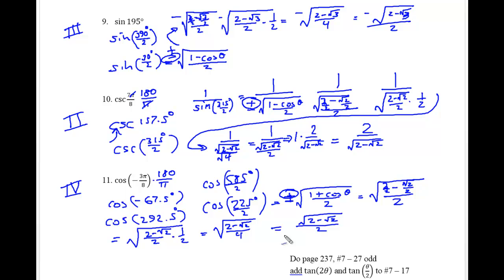You're now ready to do the homework in this section. Please make sure to add the tangent of 2θ and the tangent of θ/2 to problems 7 through 17 — that's 7, 9, 11, 13, 15, and 17. I want you to add two more parts because that will be more similar to the test questions. Thank you for watching.